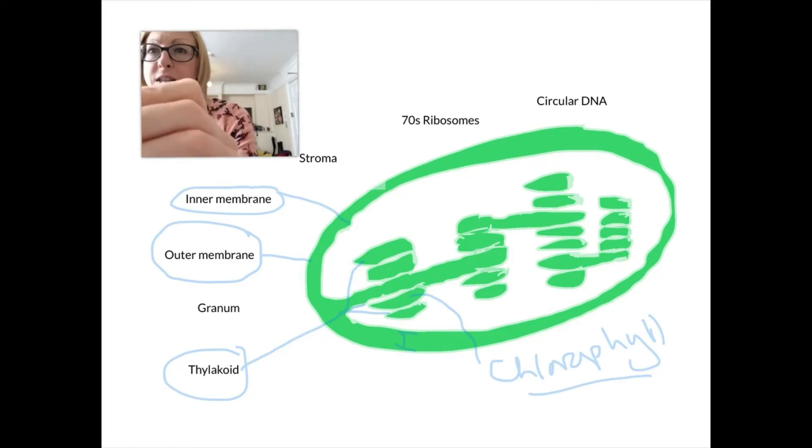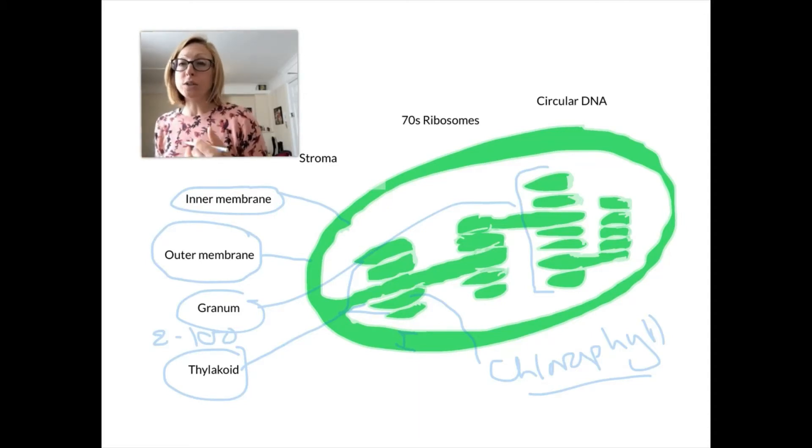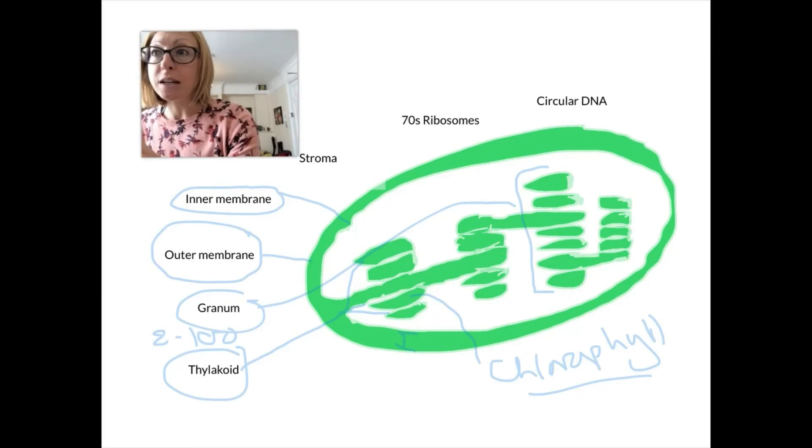A stack of these thylakoids, for example this stack, is called a granum. A granum can be between 2 to 100 stacks of thylakoids on top of each other. We can see an intergranal lamella as well, which might connect two different granums together.